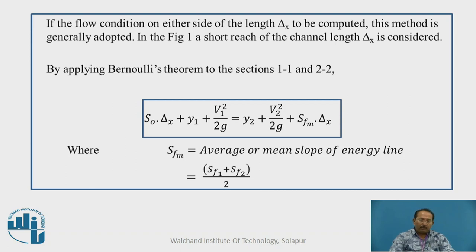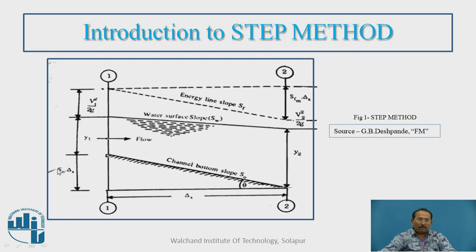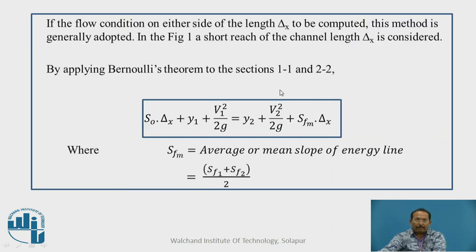Now by applying Bernoulli's theorem to section 1,1 and section 2,2. Here you can see S0 delta x, Y1 and V1 square upon 2G. Here Sfm, M is average because energy line is fluctuating. So, Sf1, Sf2, Sf3, different slopes may occur. So we have to take average of that, that is Sfm delta x. So, addition of this equal to addition remaining on the second section. S0 delta x plus y1 plus V1 square upon 2G is equal to y2 plus V2 square upon 2G plus Sfm delta x.